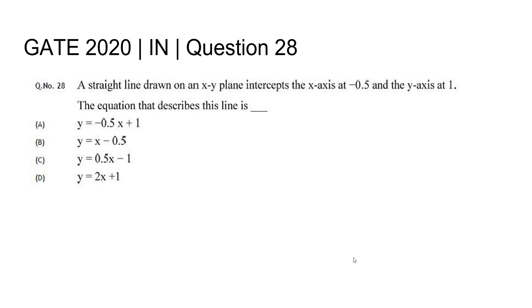Question 28, Instrumentation Engineering year 2020. A straight line drawn on an xy plane intercepts the x-axis at minus 0.5 and y-axis at 1. The equation that describes this line is...